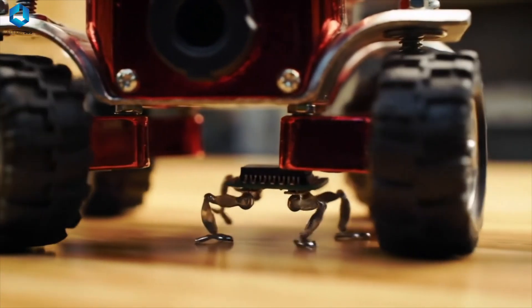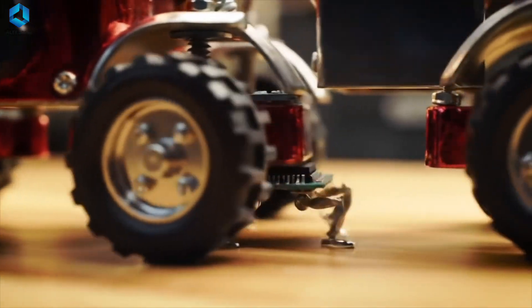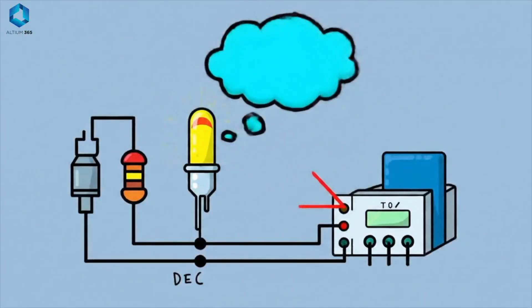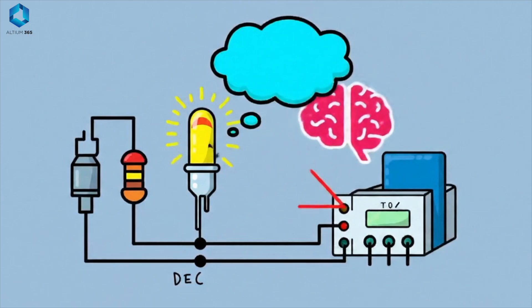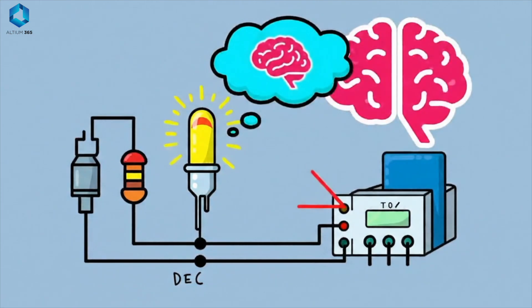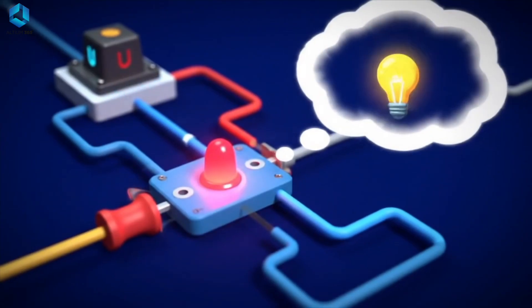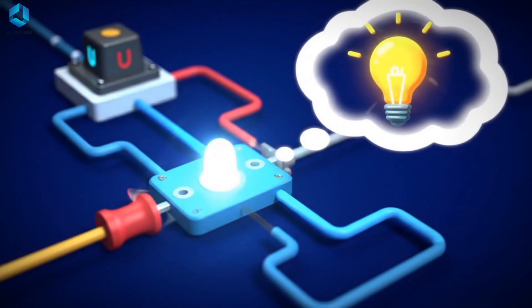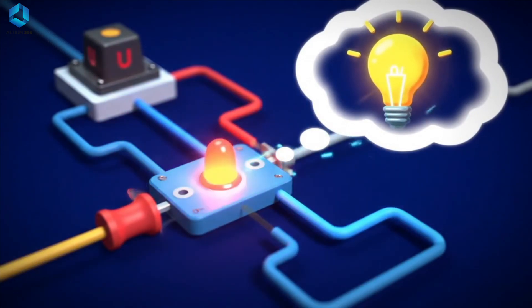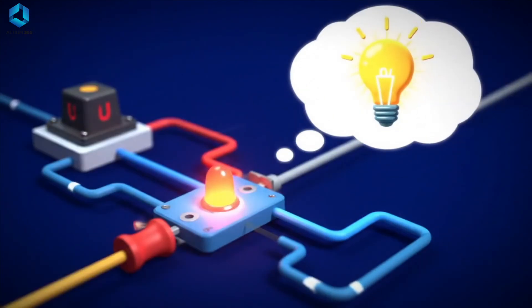If we look at simple components, we have resistors, LEDs, capacitors, diodes, and transistors. We use these with microcontrollers. Simple components can detect signals and do simple actions, but they can't do everything — they can't make decisions on their own.